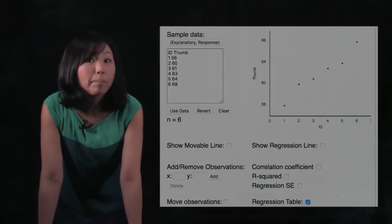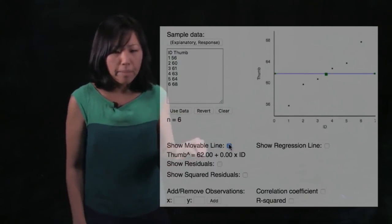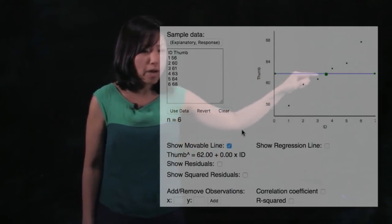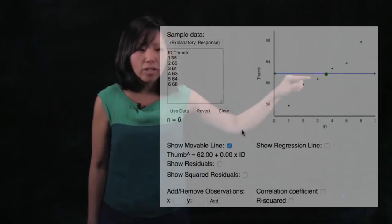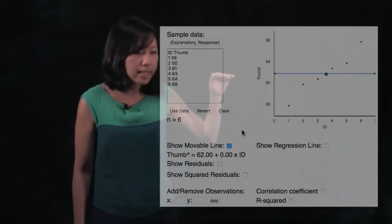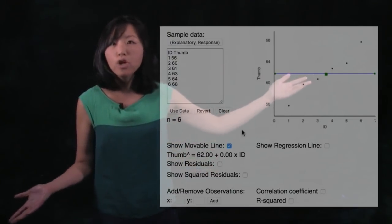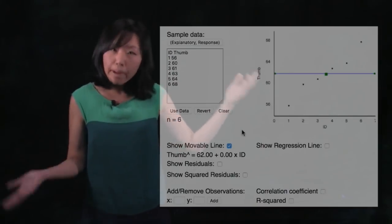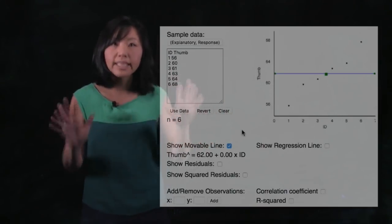So let's start first by creating a model around this set of data. So let's create a model right here by clicking on show movable line. And you could see that it creates a model for me, a very simple model. And this model is quite dumb because it is going to predict everyone is just the mean, 62. And notice nobody's thumb length is actually 62, but remember what was great about the mean? What was great about the mean was that it balanced the error.